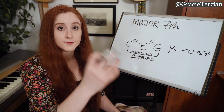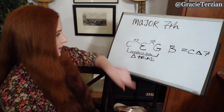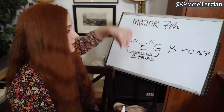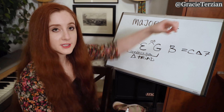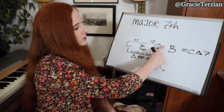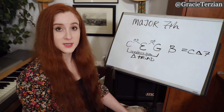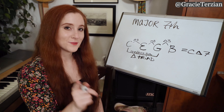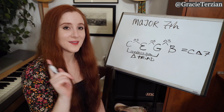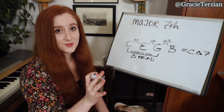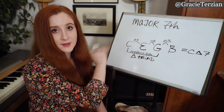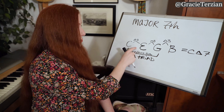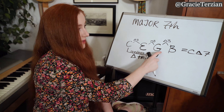Seventh chords are just stacks of thirds. From C to E we have a third, from E to G we have a third, and from G to B we have a third. So there are actually three different thirds in this chord. What type of third is it between G and B? It's a major third. So in a major seventh chord — not just C major seventh, but any major seventh chord — we have stacks of thirds, and the order goes: a major third, a minor third, and then a major third. It's like a little sandwich — major thirds with a minor third in the middle.